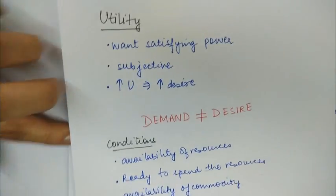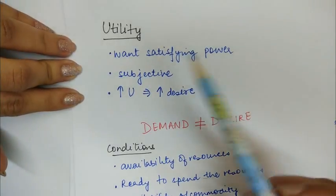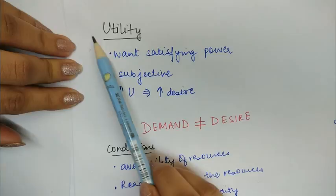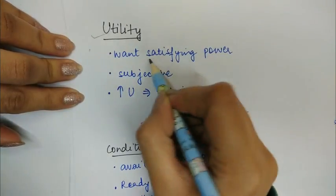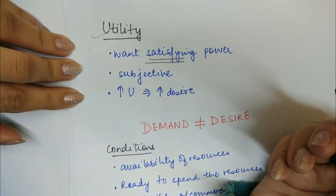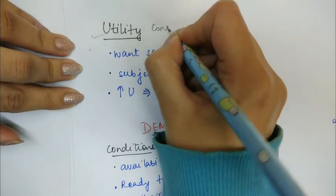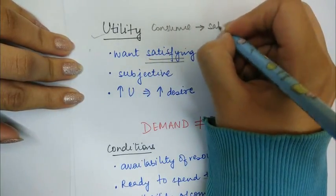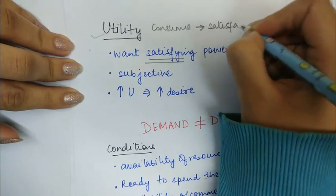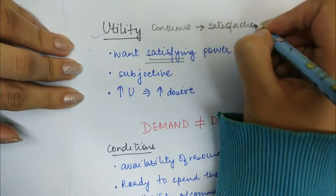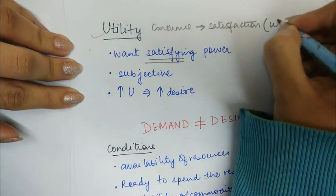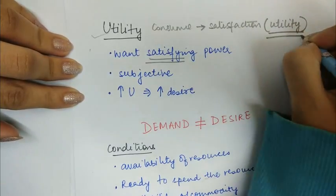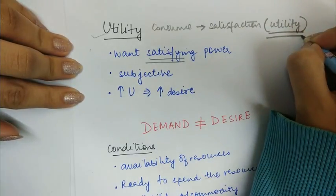Before moving on to the meaning of demand, we will understand the concept of utility. Utility is the want-satisfying power of a commodity. Whenever you consume a commodity, you derive a certain amount of satisfaction from its consumption, and that is called utility.